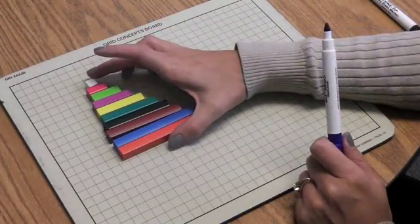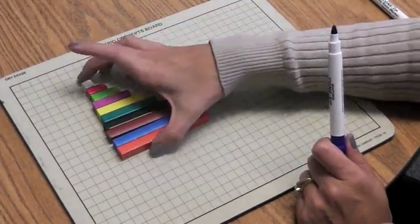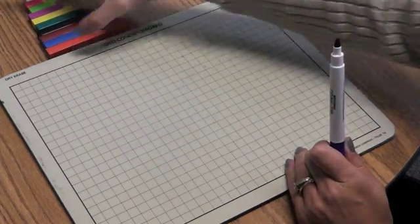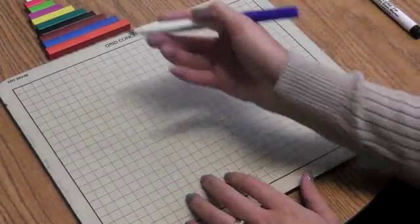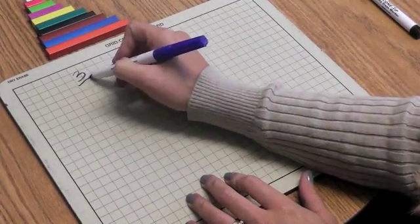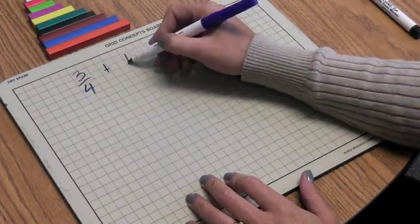Cuisenaire rods are math manipulatives that have units and measurements from 1 to 10. So I'm just going to move these off the screen, but I'm going to build some fractions with them. Let's say that we have the fraction 3 quarters plus 1 fifth.